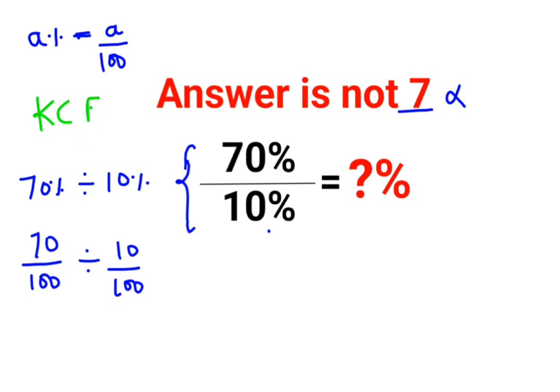K stands for keeping the first number as it is, C stands for changing the division sign to multiplication, and F stands for flipping or taking the reciprocal of 10/100, which is 100/10.